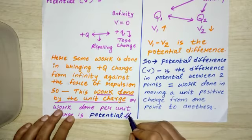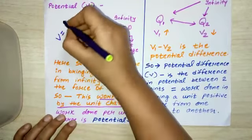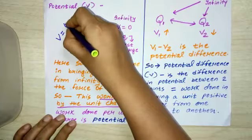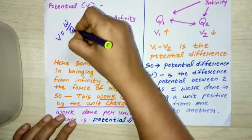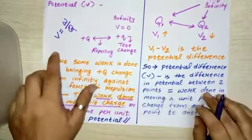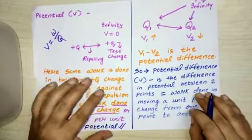The symbol for potential is V, the symbol for work done is W, and the symbol for charge is Q. Potential is work done per unit charge.